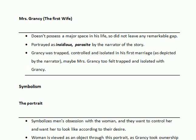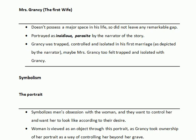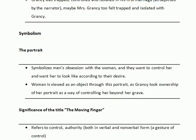Moving towards the first Mrs. Grancy, she also was not given any name and was associated only with Mr. Grancy, called Mrs. Grancy. She does not possess a major space in his life and was portrayed as insidious and a parasite by the narrator. We are given indication that Grancy was trapped, controlled, and isolated in his first marriage. Perhaps Mrs. Grancy too felt trapped and isolated with Grancy, but we have not been given any hint by the narrator, so we cannot say for sure.